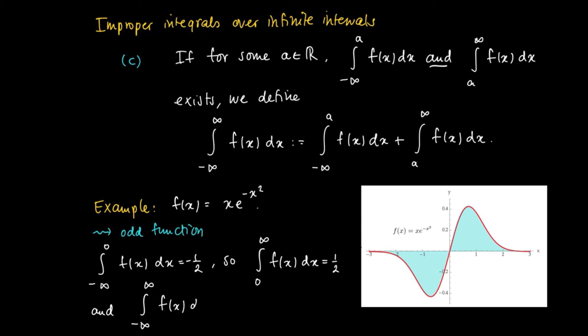So we can compute the integral from minus infinity to infinity of f(x) dx. Since both parts exist for a equals 0, we can just add these two numbers, minus one half and one half, which equals zero.